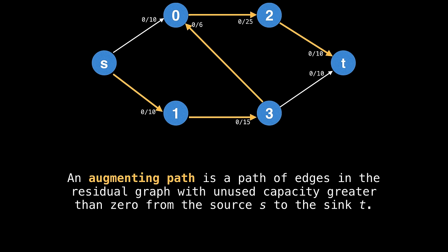An augmenting path is a path of edges in the residual graph with capacity greater than zero from the source s to the sink t. In orange here I have highlighted a possible augmenting path. The key thing to remember about an augmenting path is that it can only flow through edges which aren't fully saturated yet. In fact, you've achieved the maximum flow when there are no more augmenting paths left to be found.